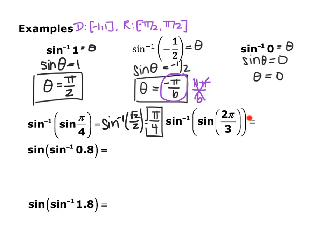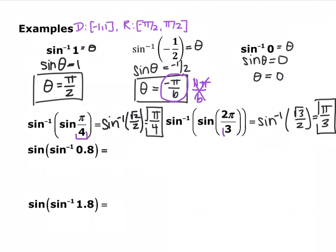Try the second one: sine inverse of the sine of 2π/3. Sine of 2π/3 is √3/2, and then sine inverse of √3/2, because of our restricted range, is π/3. Notice that the first example ended up with the same answer as what was inside, but the second one didn't. The way to tell is whether the angle matches the range of the inverse. If it does match, you can cancel them off and get whatever's inside. If it doesn't match, you have to find the angle in the correct range — quadrants one and four — that gives the same trig ratio.